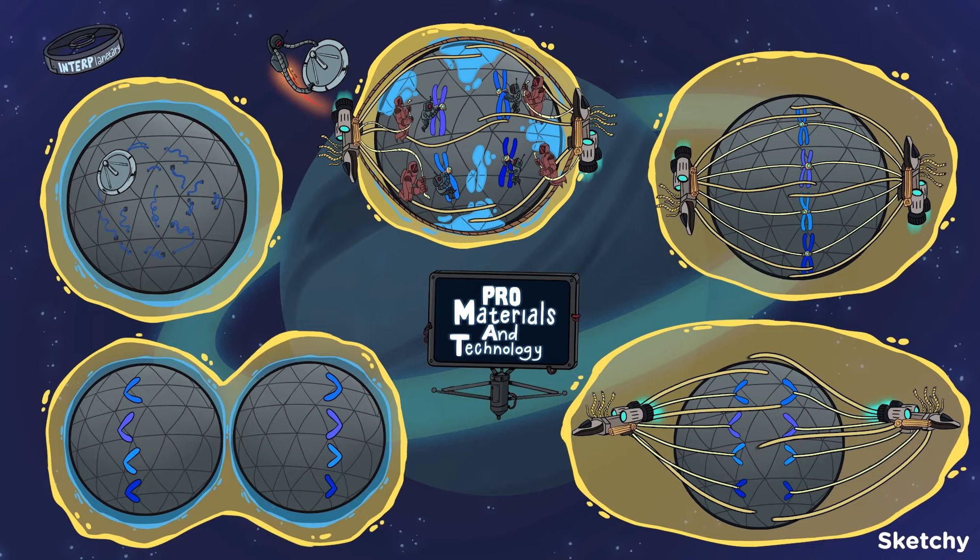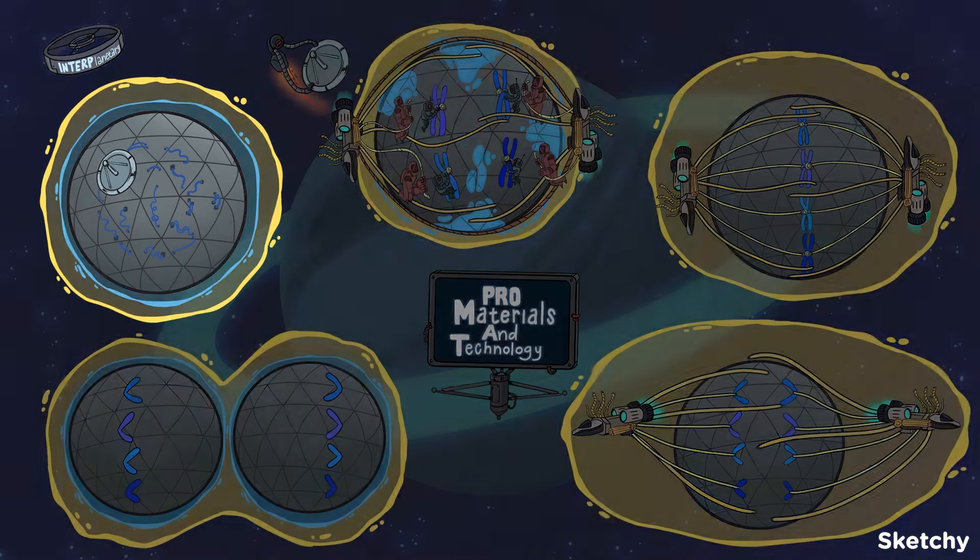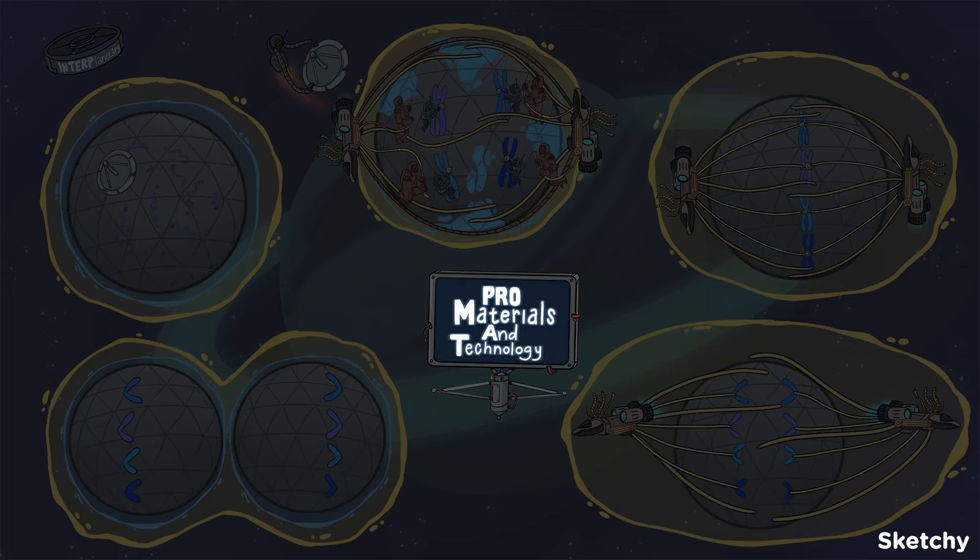Mitosis is a type of cell division that produces two genetically identical diploid daughter cells from each parent cell. Mitosis comes right after interphase and is divided into four stages. Prophase, metaphase, anaphase, and telophase,